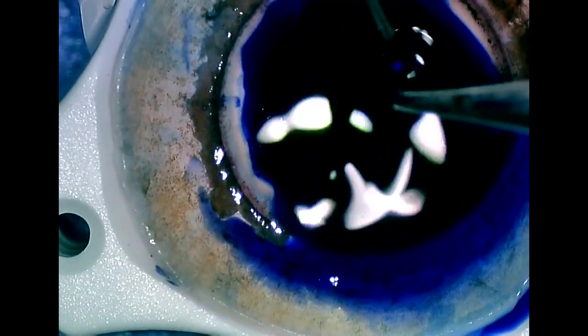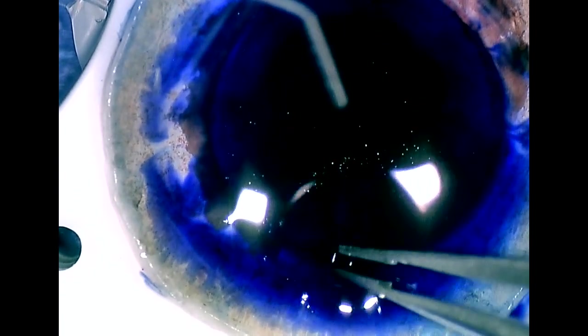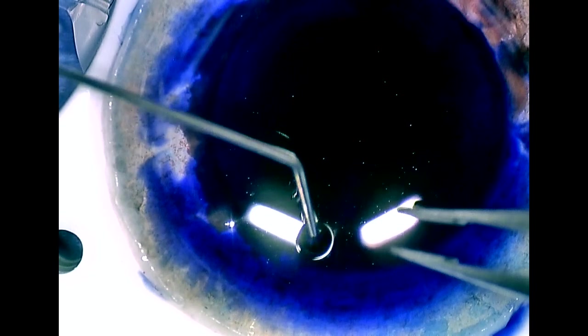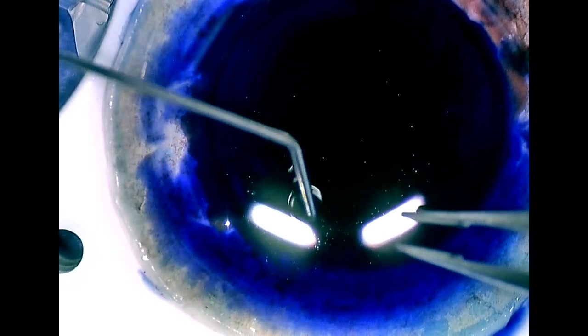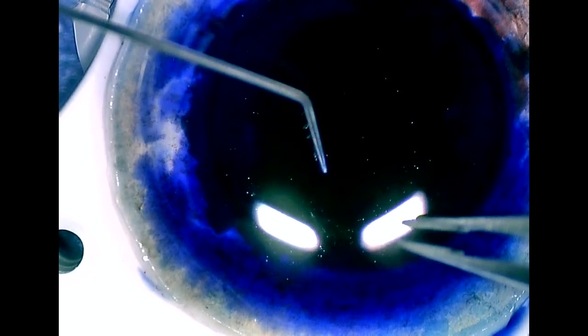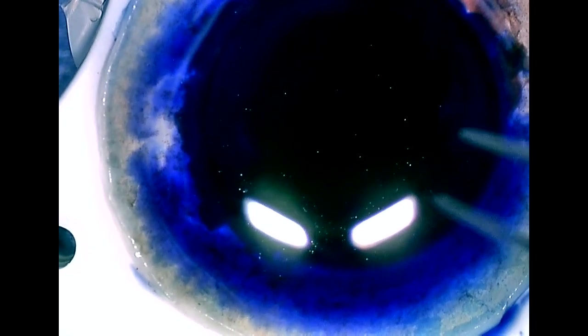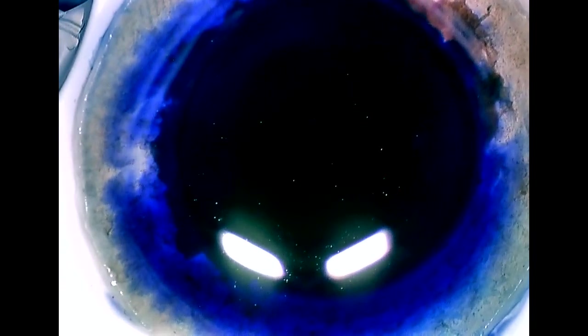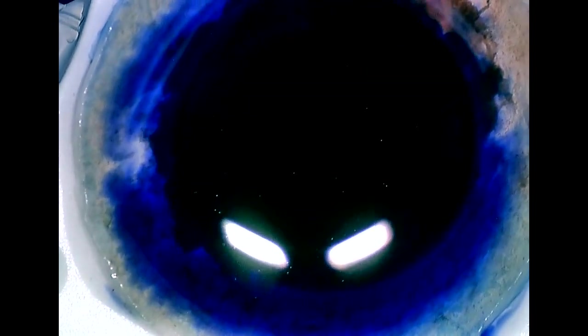Now we'll stain our graft with Trypan Blue. So we've got that tissue there, it's been freed from the posterior portion of the donor cornea and we're going to stain for about 60 seconds with Trypan Blue. I am of the opinion that excessive Trypan Blue dye or excessive exposure to Trypan Blue dye can cause damage to the corneal endothelium.